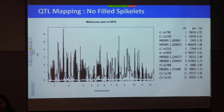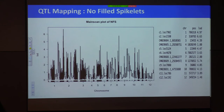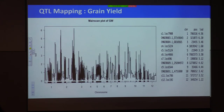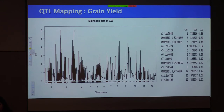For number of filled spikelets, good QTLs appeared on chromosome 2 around LOD 7, and also on chromosome 1. I still need to clean and filter more markers. For grain yield, I also found good QTLs on chromosome 2, chromosome 1, and around chromosome 8, with the highest LOD value on chromosome 2. I consider chromosome 2 the most promising because both grain yield and number of filled spikelets QTLs co-localize there.